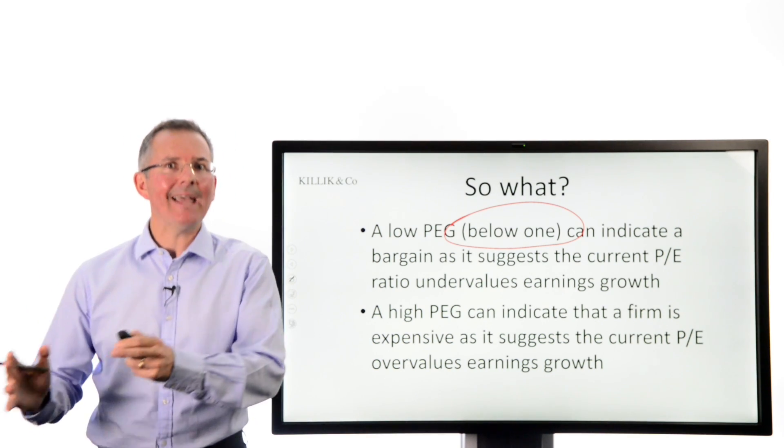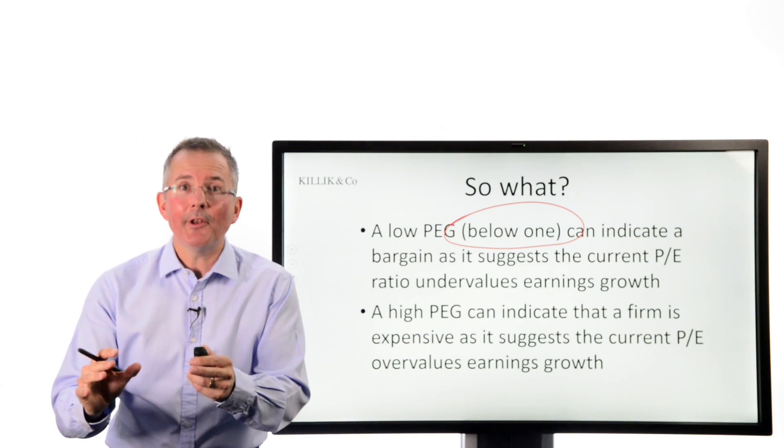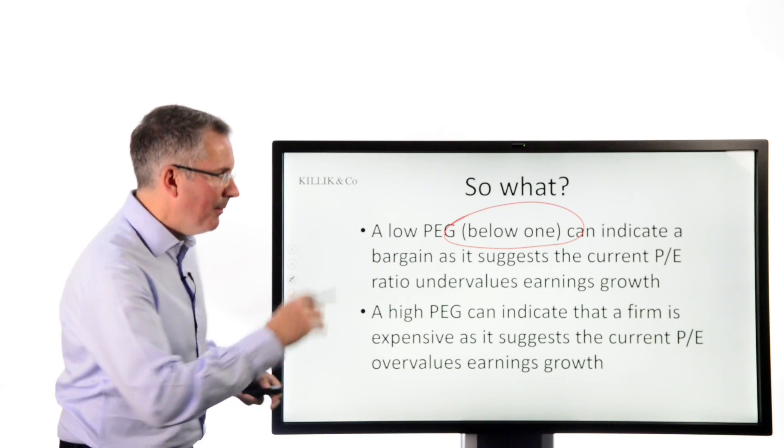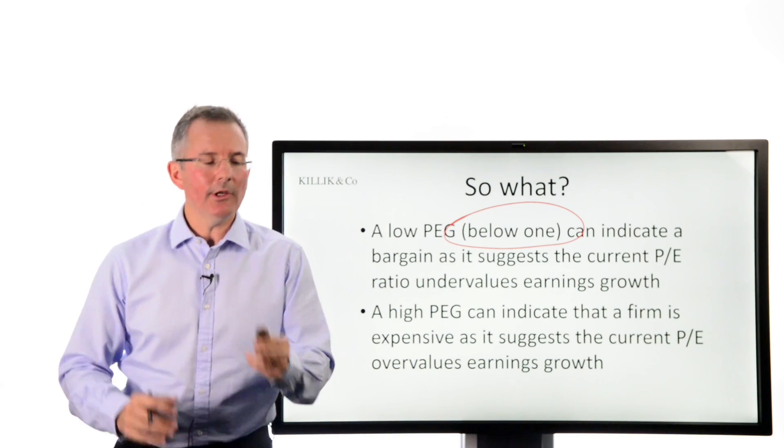But in a bull market, a lower PEG than average, yeah, maybe we've got a bargain. A higher PEG than average, above 1 as a textbook rule of thumb, maybe suggests that the current PE ratio is a bit toppy. That's the way to use the PEG.